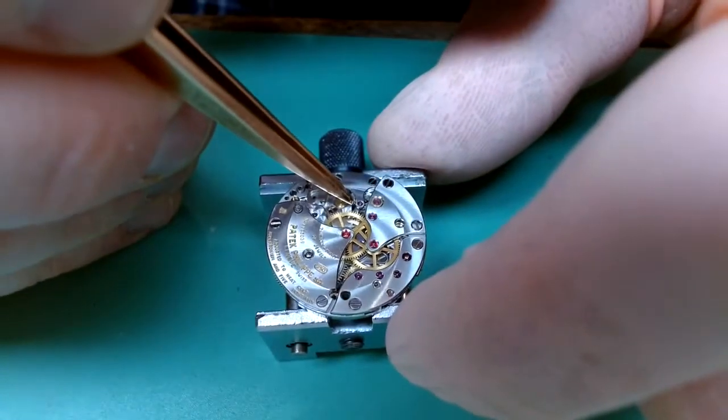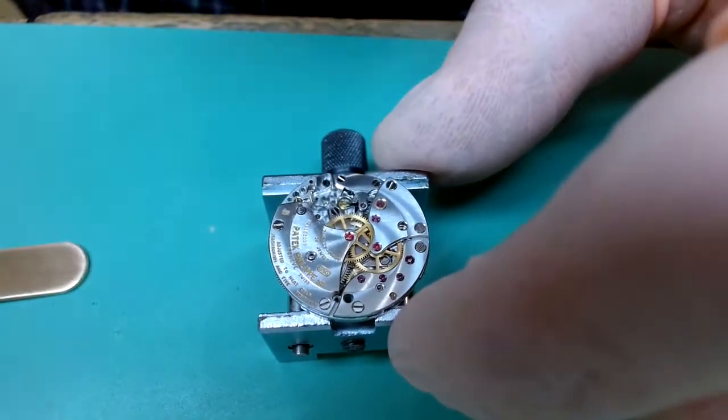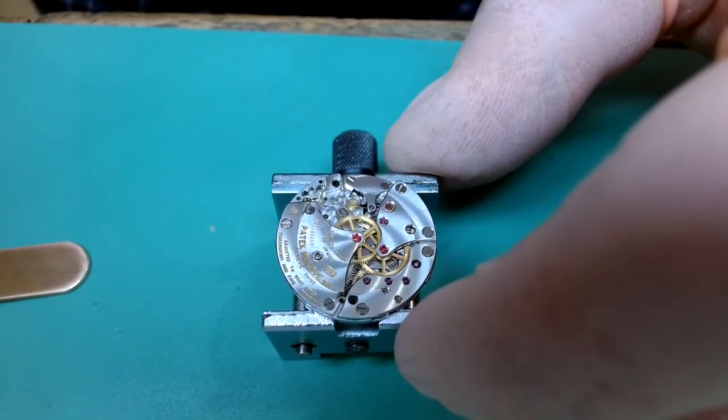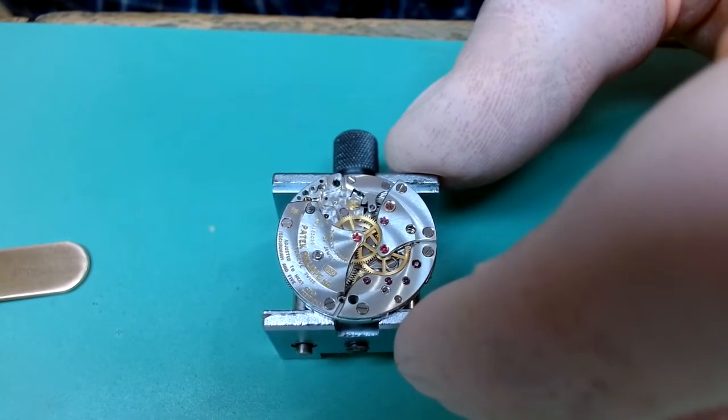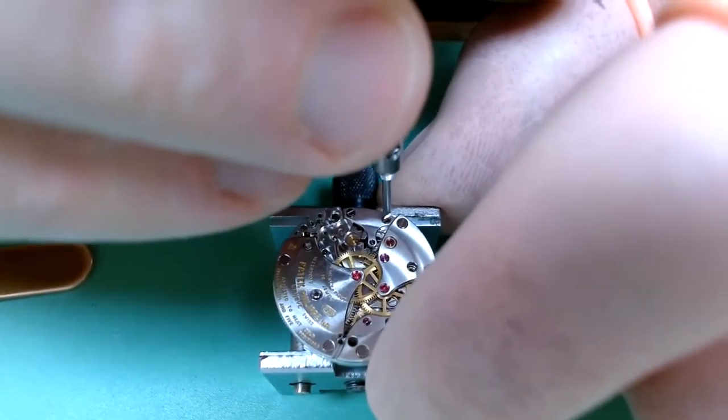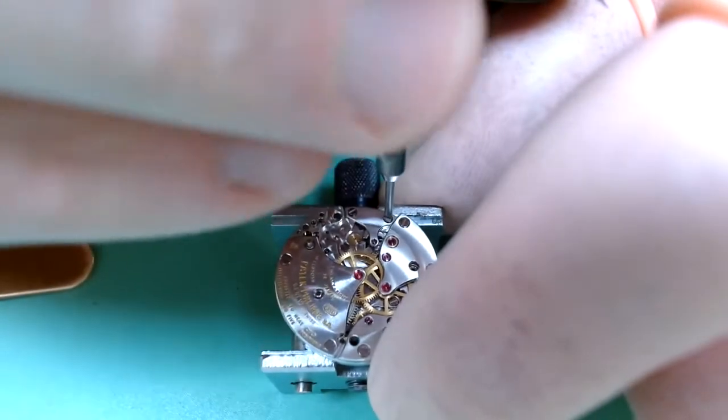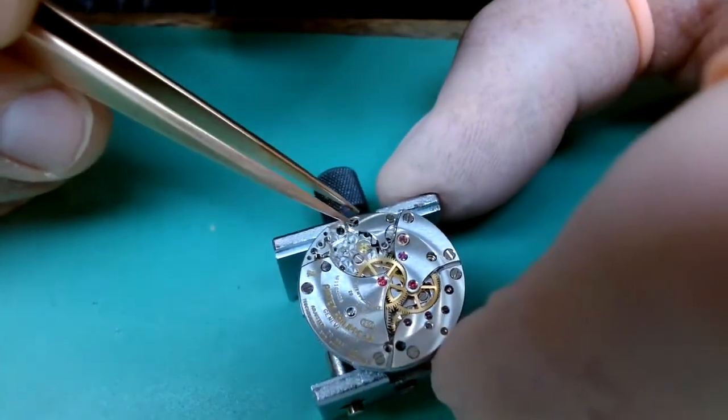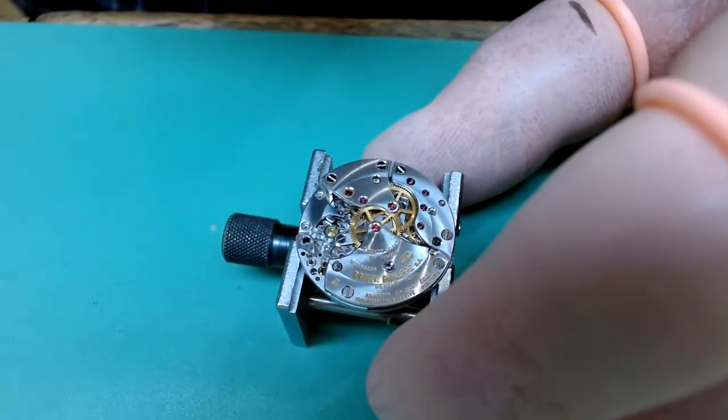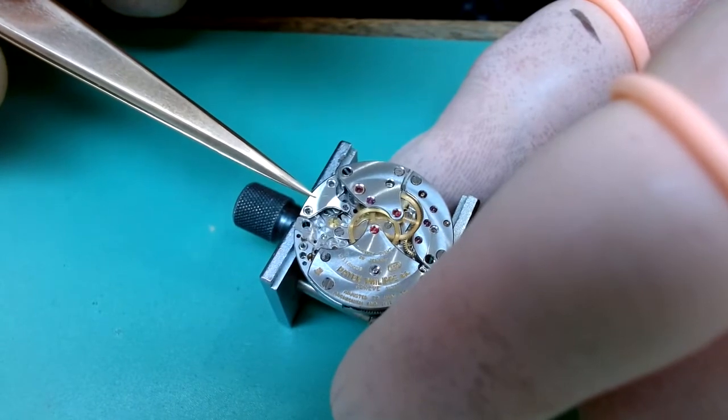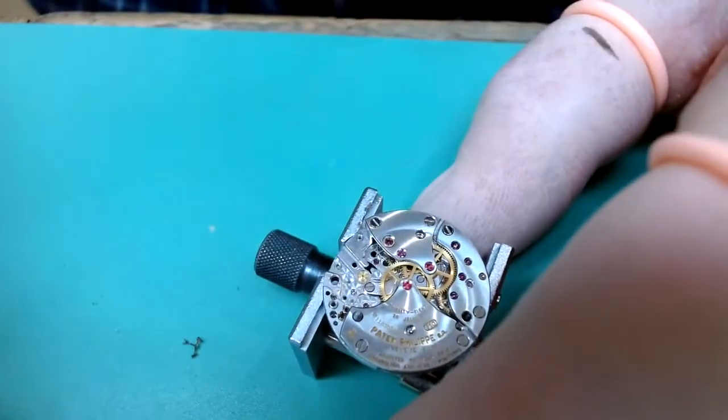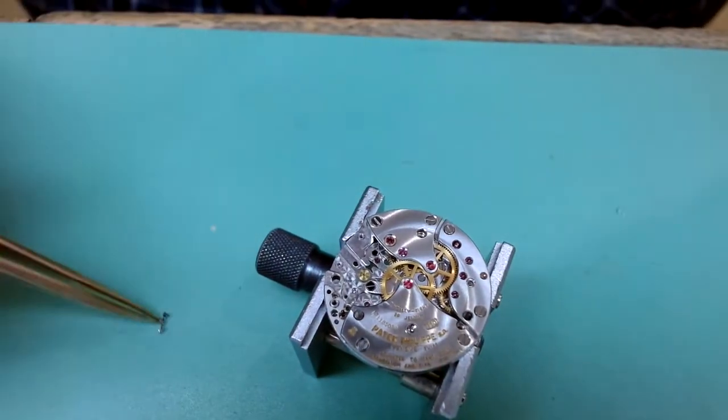And while we're dismantling the rest of our watch, we'll safely put our balance in our movement tray over to the side. And we can check our end shakes with our pallet fork and escape wheel at this stage. We can remove our pallet cock screws. Just a small residual amount of power there in the train that was released.